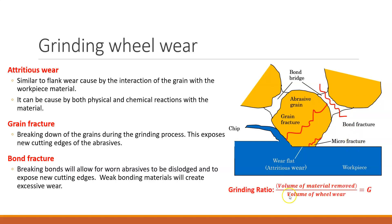All three wear types result in losing wheel material, which brings us to the concept of the grinding ratio. The grinding ratio is the volume of material removed versus the volume of wheel worn away. It's a ratio measuring how fast material is removed versus how much wheel is lost. This helps you understand the composition of your swarf — part of it is wheel material, part is the workpiece material being removed.